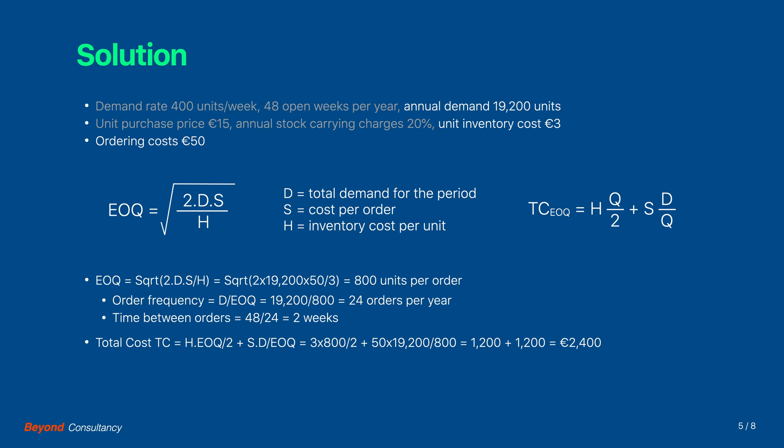We may do a sensitivity analysis of the total cost function by varying the order size around the optimum value. For an order size of 700 units instead of the 800, the total cost function increases to 2,421 euro. For an order size of 900 units the total cost function becomes 2,417. We notice that the cost function does not look exactly symmetrical around the optimum. Let us look at the graph.